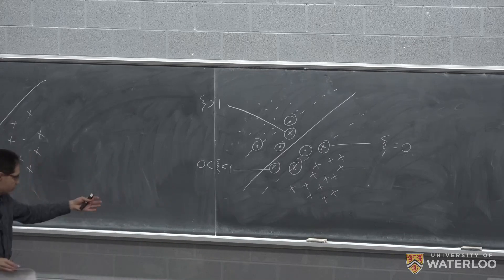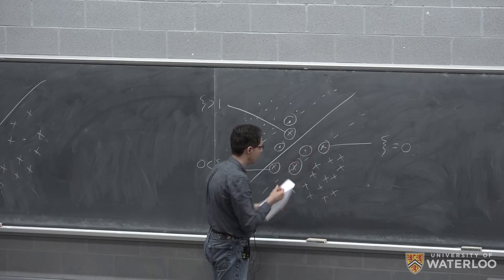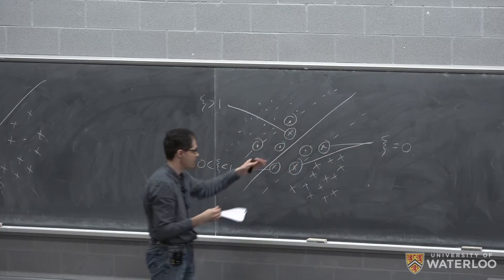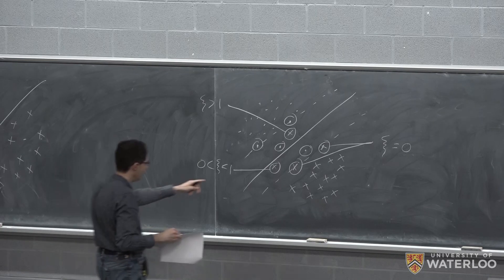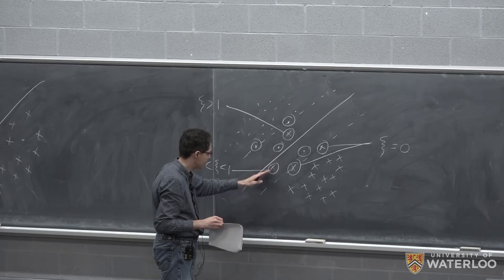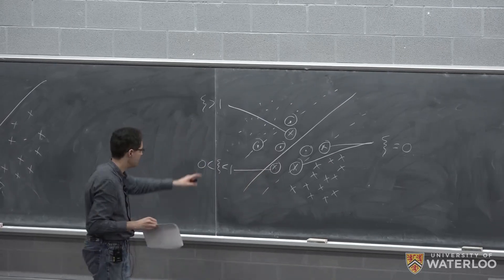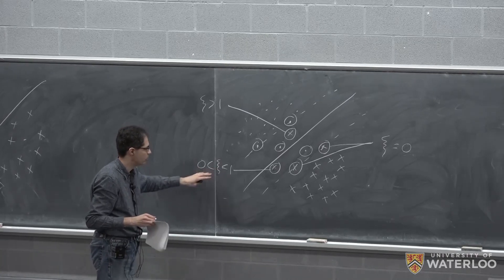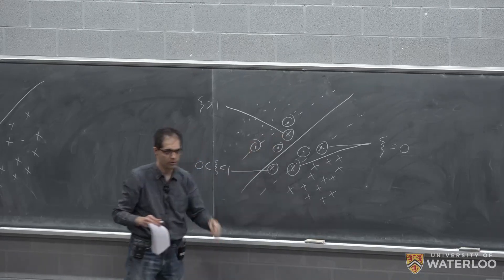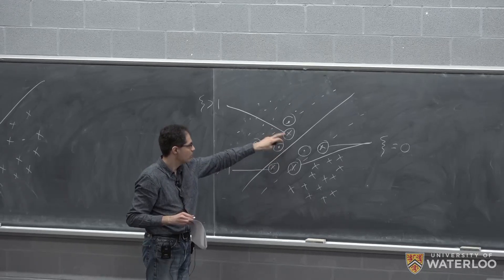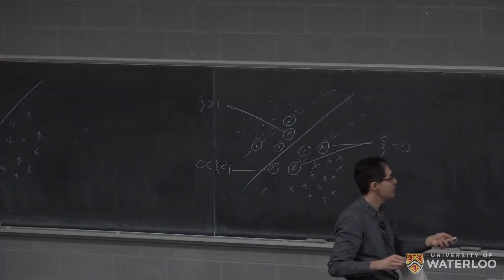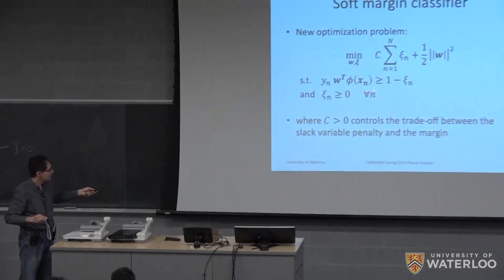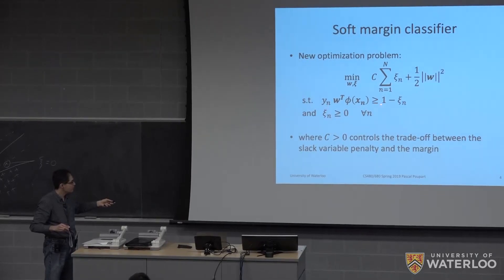Looking at the crosses: the two points on the margin have a slack variable of exactly zero because their distance is satisfied — it's at least one. One point inside the margin has a distance less than one, so its slack variable is between zero and one. Another point is even worse — it's misclassified, on the wrong side of the separator, so it needs a slack variable greater than one.